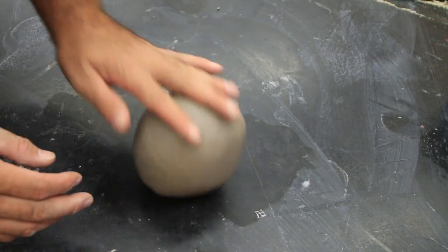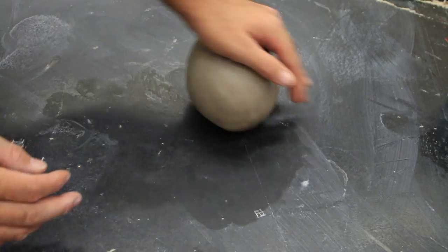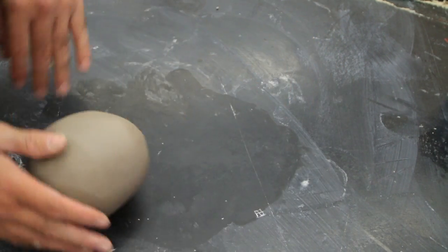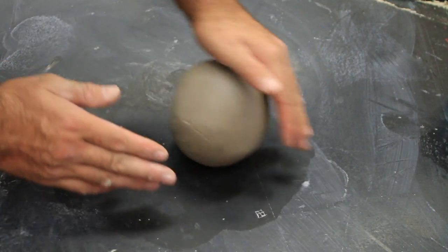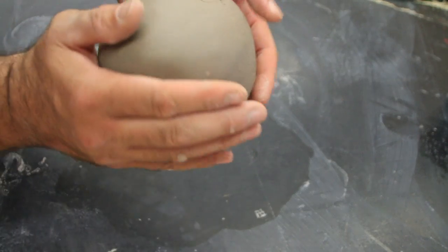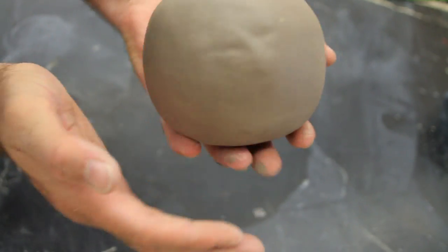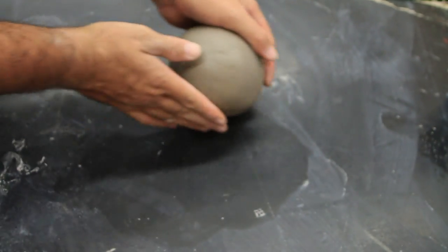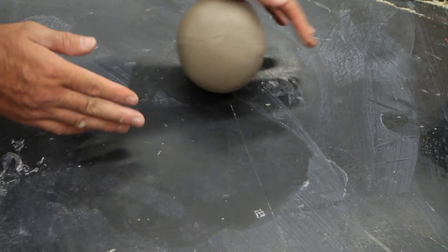I've seen students do this for so long that their clay sphere becomes shiny. It's really actually pretty cool. It just burnishes all the bumps out of it and gets it perfectly into a sphere. But you have to be really careful to make sure that you go in all different directions. If you go in the same direction over and over again, it'll become a cylinder instead of a sphere.